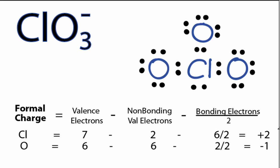It turns out our formal charges show that we have a +2 formal charge on the chlorine and the oxygens each have a -1 formal charge. If you add that all up, it does give you this minus charge, which makes sense.